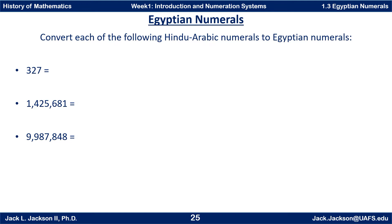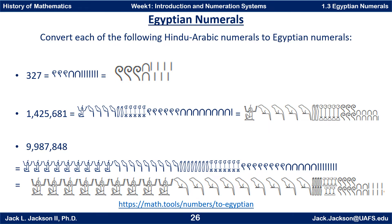Now let's reverse it. Convert each of the following Hindu-Arabic numerals to Egyptian numerals. Work it on your own — press pause now. Here are the solutions. I've written them two different ways. The first uses the special font, typed horizontally. But the Egyptians didn't always write them horizontally — sometimes they grouped symbols differently. The second representation came from an online converter at Math Tools. Remember, this notation is not positional, only additive, so the position of symbols is irrelevant. Although they generally placed higher-value symbols on the left.